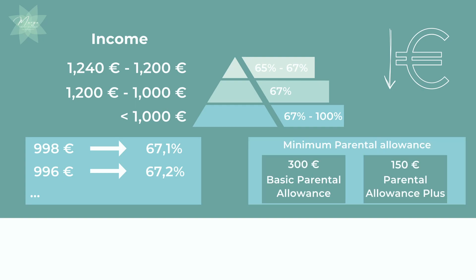You will receive at least the minimum parental allowance — 300 euros for basic Elterngeld and 150 euros for Elterngeld Plus or Partnerschaftsbonus — even if you had no income at all before the child was born.